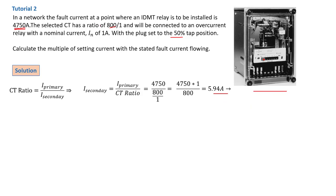We know that the formula for M, the multiple of setting current, is M equals I secondary over the setting current. And the setting current is equal to the nominal current here. It has a nominal current of 1 amp times the plug settings, which are set at 50%.